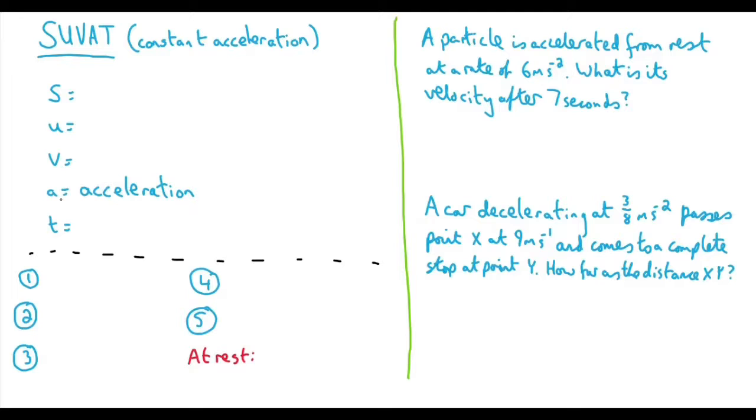The S here stands for displacement. Now, displacement is in the same vein as distance. The difference is, if you were to take a winding path through the country like this, let's say that distance there was 10 kilometres. The displacement, however, would just be the strict distance from your start point to your end point, as the crow flies in a straight line.